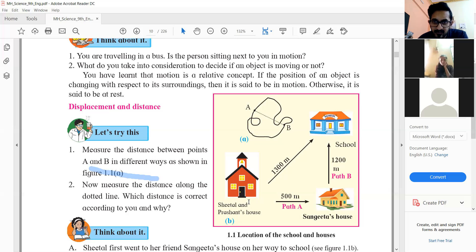So in the second case, how much distance happened? In the first case, their distance was 500 plus 1200, that is 1700 meters. And when they go straight, their displacement is 1300 meters.